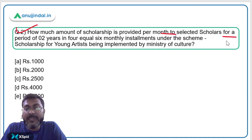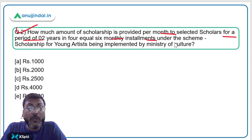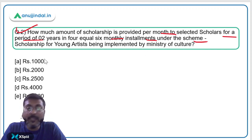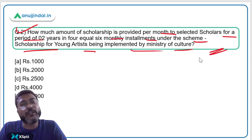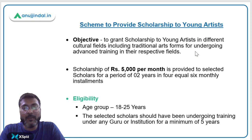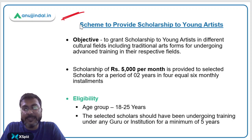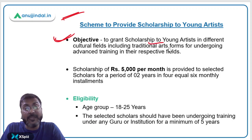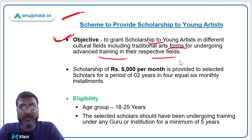Question 2 asks how much scholarship is provided per month to selected scholars for a period of two years in four equal six-monthly installments under the Scholarship of Young Artists scheme implemented by the Ministry of Culture. This scheme is in the news because the Ministry of Culture submitted a reply in Parliament. Its objective is to provide scholarships to young artists in different cultural fields including traditional art forms for advanced training.